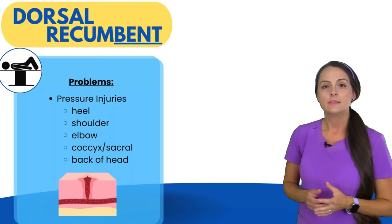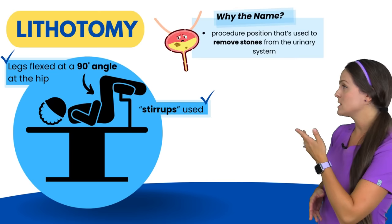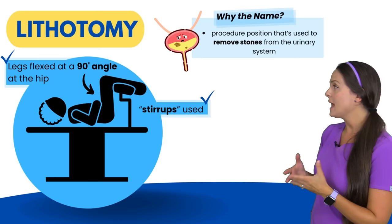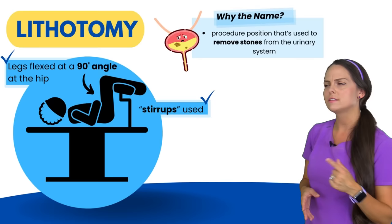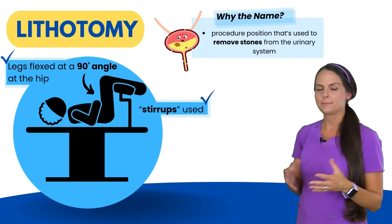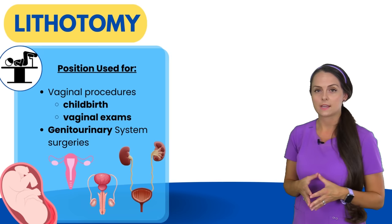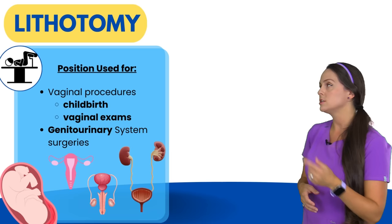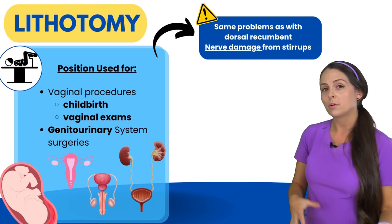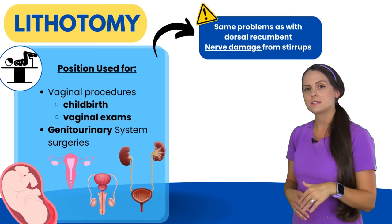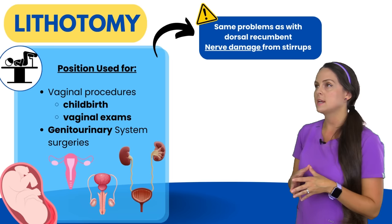Next we have the lithotomy position. Similar to dorsal recumbent with the patient lying on their back, but the legs are flexed at a 90-degree angle at the hips and the calf portion of the legs is usually placed in stirrups. 'Lith' means stone and '-otomy' deals with an incision into a body part, so this position is used during procedures to remove stones from the urinary system. It's also used during vaginal procedures such as childbirth and vaginal exams, and any genitourinary surgery. Pressure injury risks are similar to dorsal recumbent, and nerve pressure in the legs from the stirrups must be monitored.